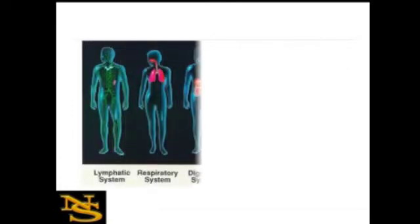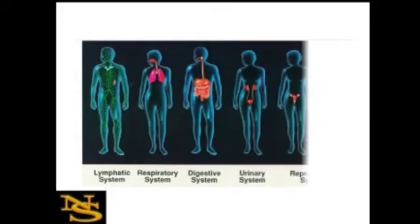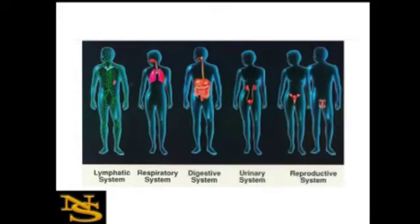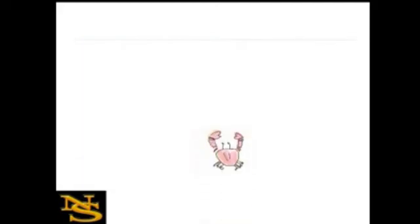Here are some examples of some organ systems that you have in the human body. So a multicellular organism will have multiple organ systems within it. Here's an example of a multicellular organism you might be familiar with, a crab.